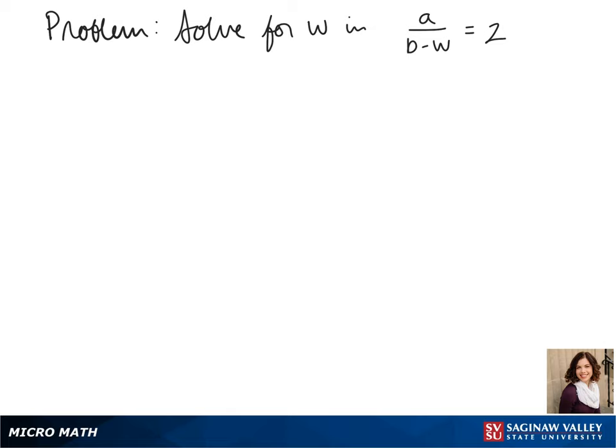Welcome to another day of algebra. Today we'll be solving for w in the formula a over b minus w equals 2.